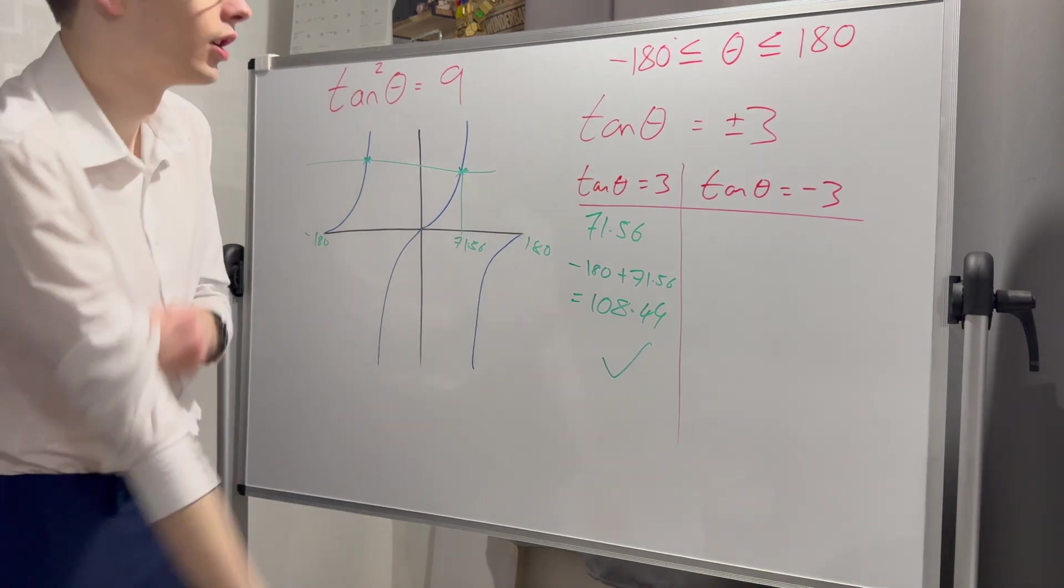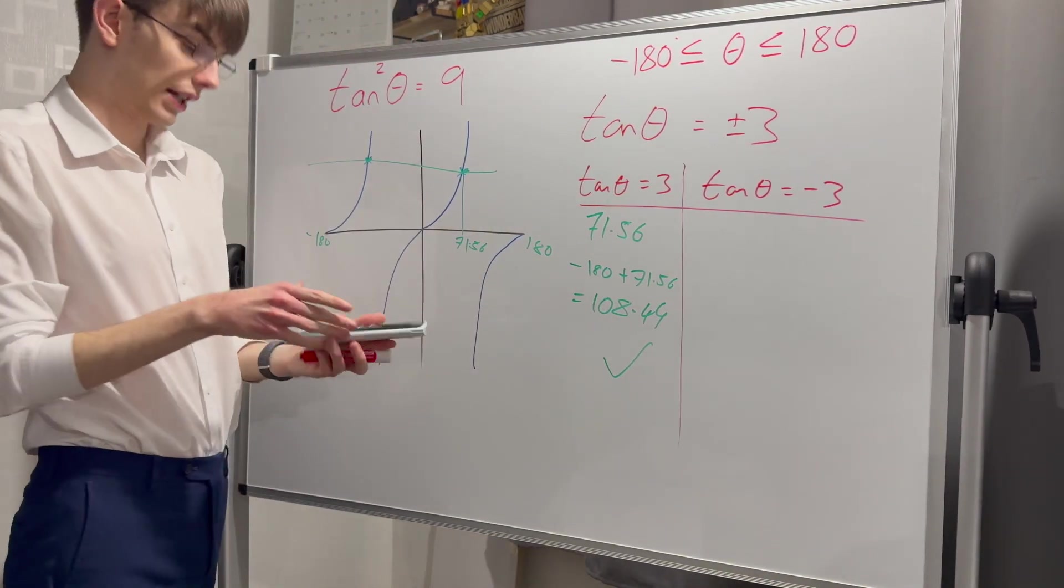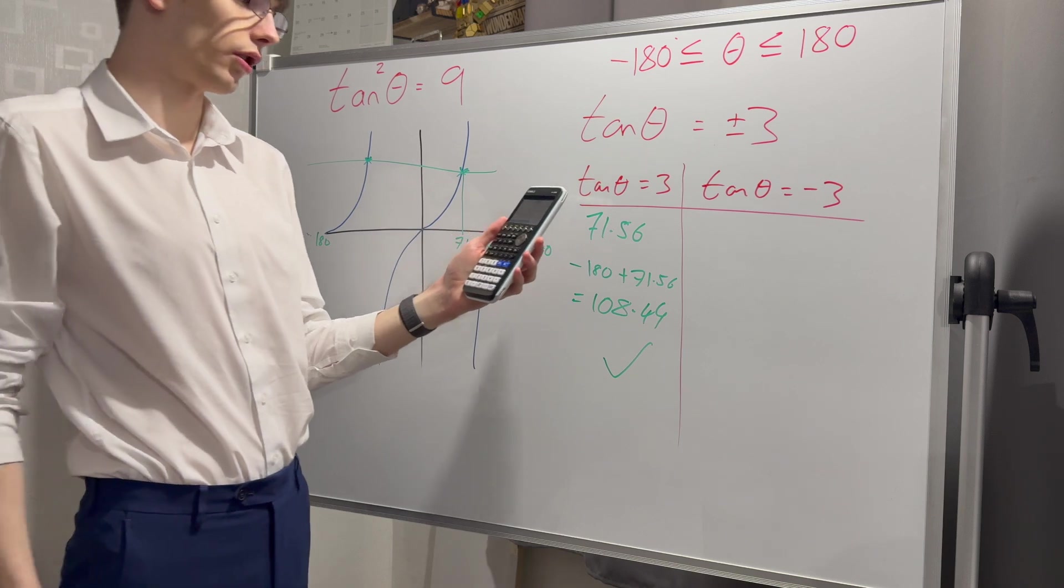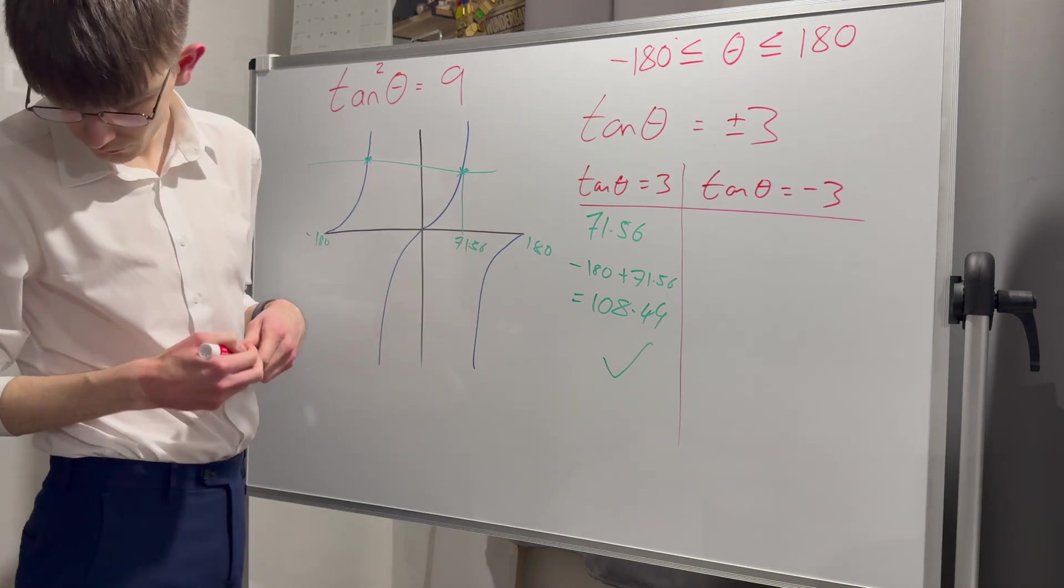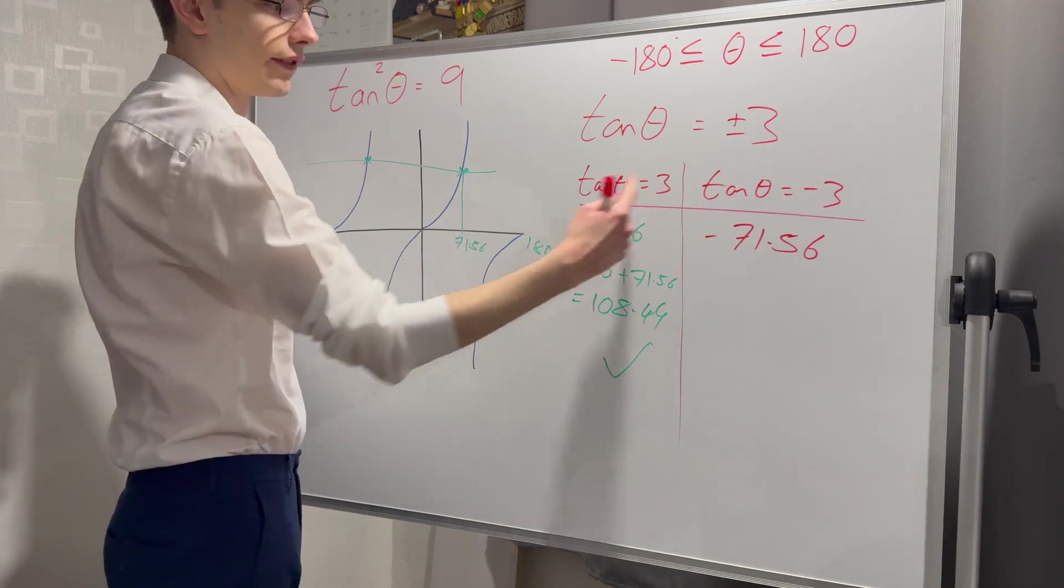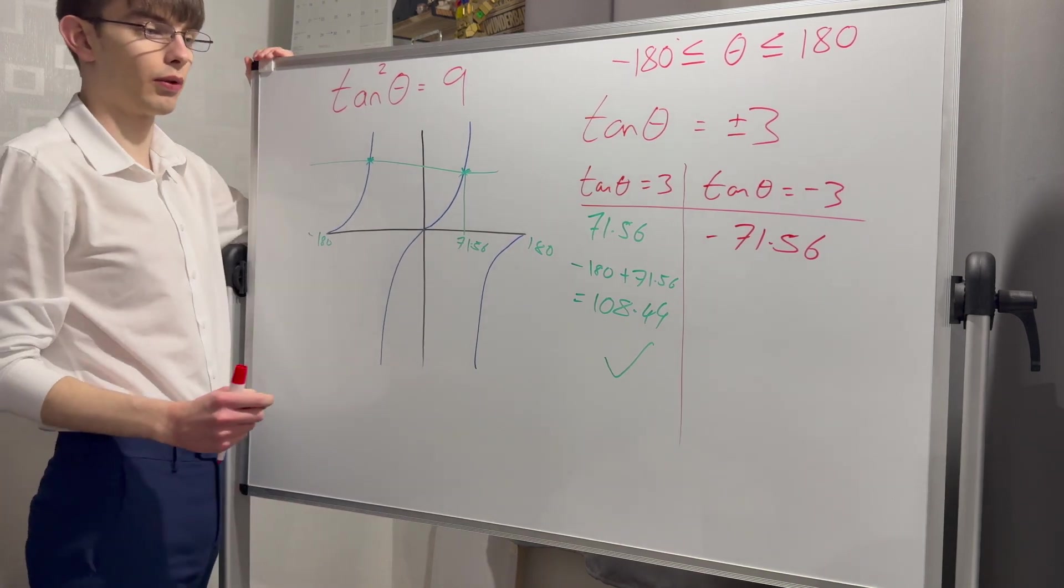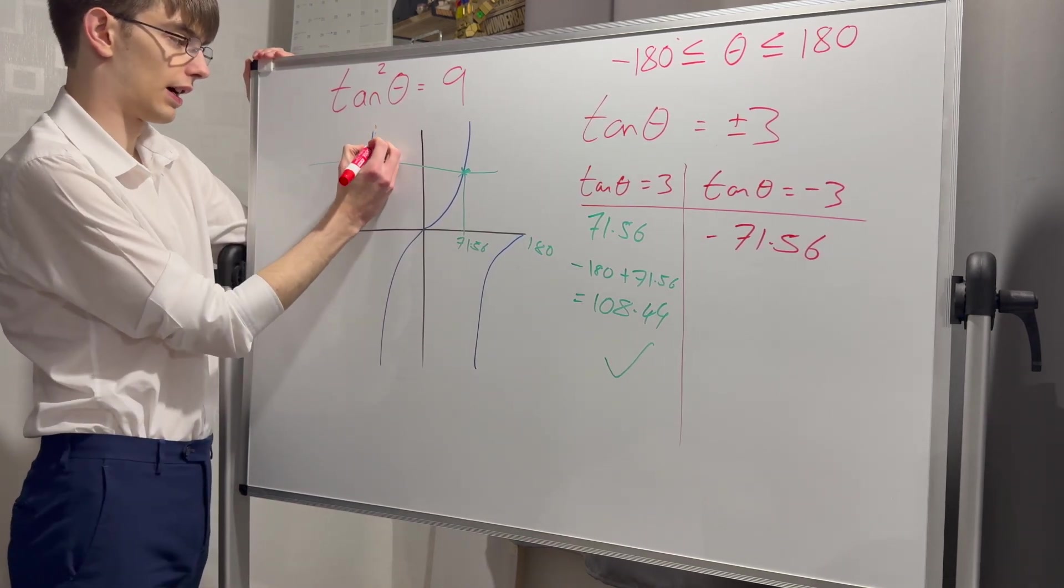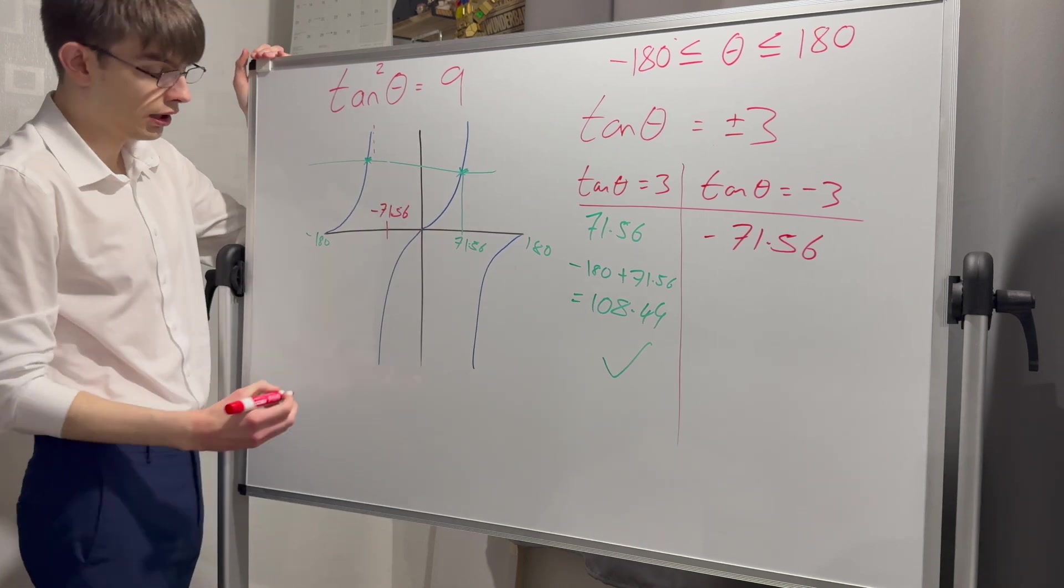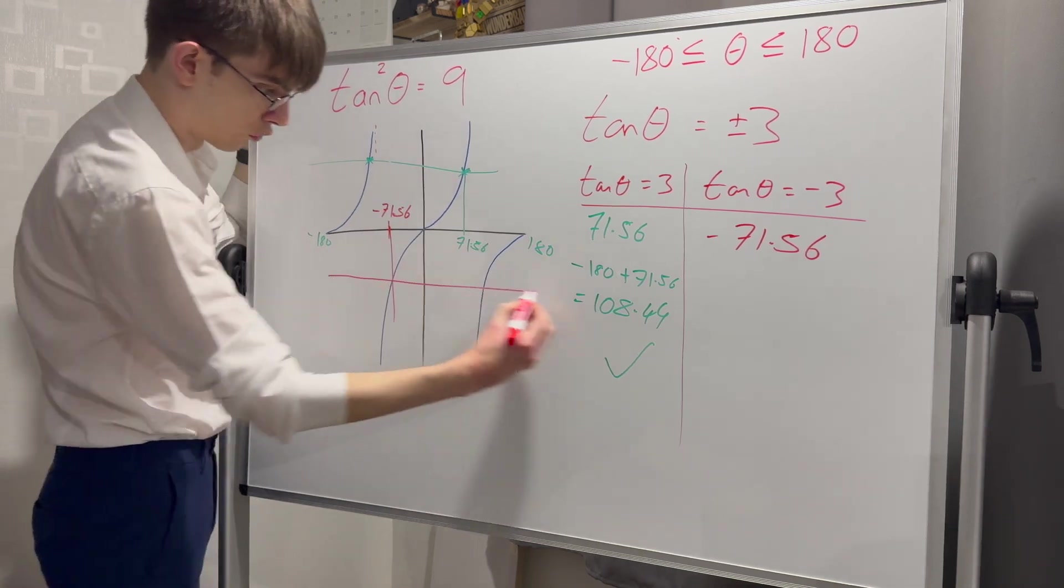Switch to red for the next bit. Once again, exactly the same process, but with tan theta is minus three. Grab my calculator. Inverse tan of minus three is minus 71.56. Makes sense, the negative value gives this negative value. So what am I going to do? Find minus 71.56 on my graph. My asymptote here is minus 90, so minus 71.56 is about here.